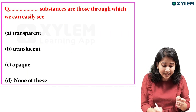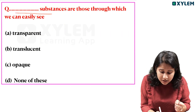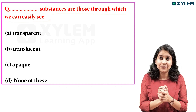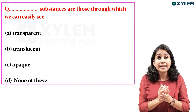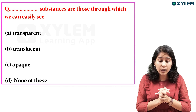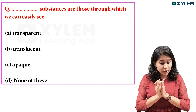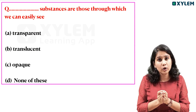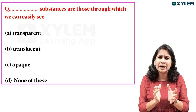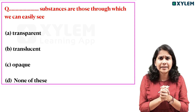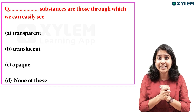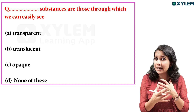The first question is: Bad substances are those through which we can easily see. What are the options? Transparent, translucent, opaque, or none of these. We are going to study a topic and classify three types of materials.